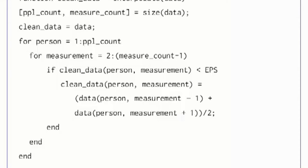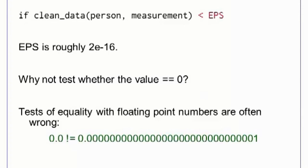For each matrix element, which we index by the variables person and measurement, we check for a very small value. If the value is nearly 0, we reassign it to the average of the left and right values. Note that if those values are also 0, then linear interpolation might still return an erroneous value. In our test for values that are 0, we do not use the most obvious solution, which is to test for values that are equal to 0 using the equals comparison. This is because MATLAB is using floating-point numbers, and floating-point equality tests can be unreliable. Using a small number that is slightly larger than 0, but still much smaller than our measurement values, is a good way to avoid this problem.